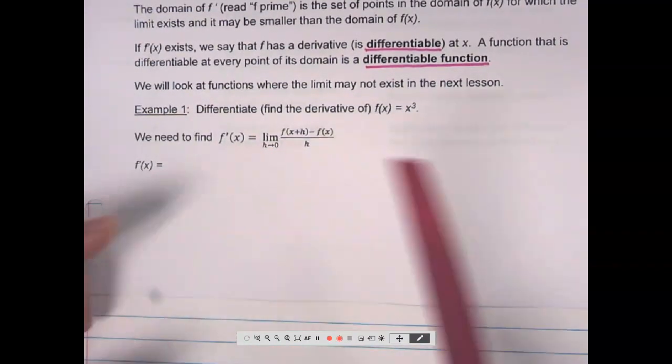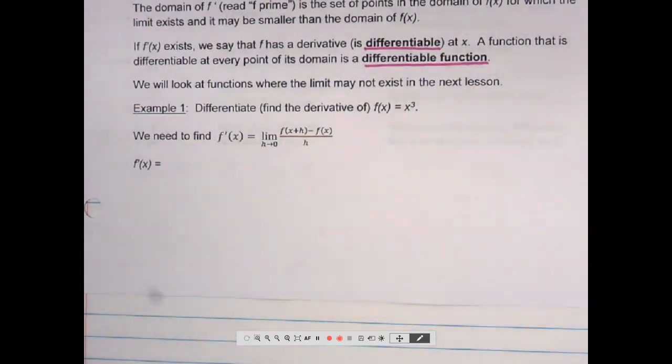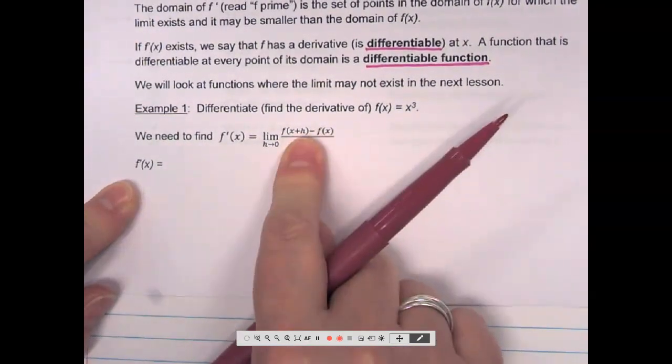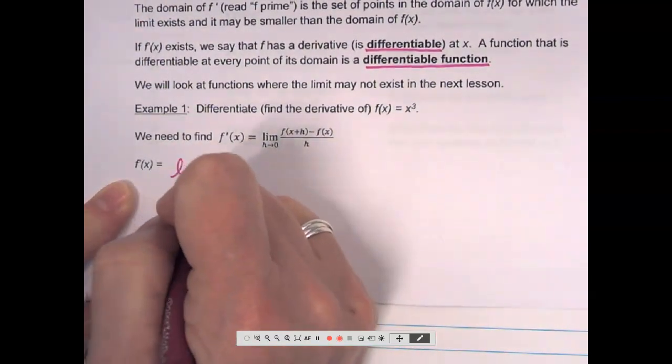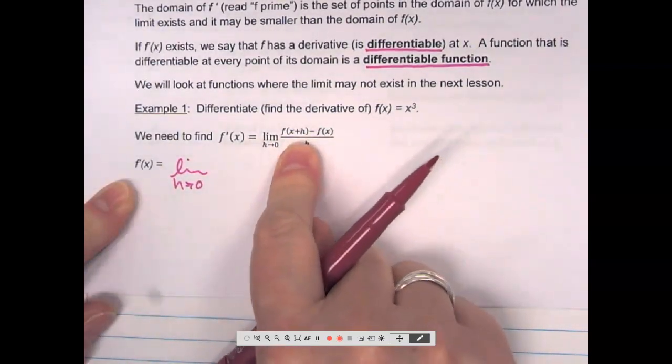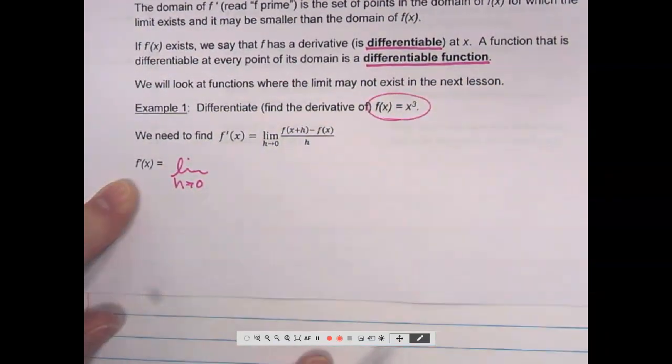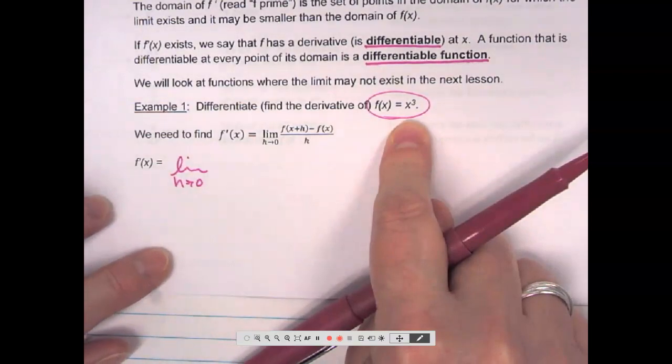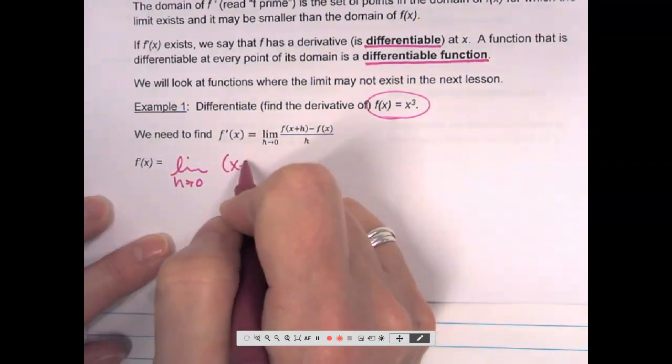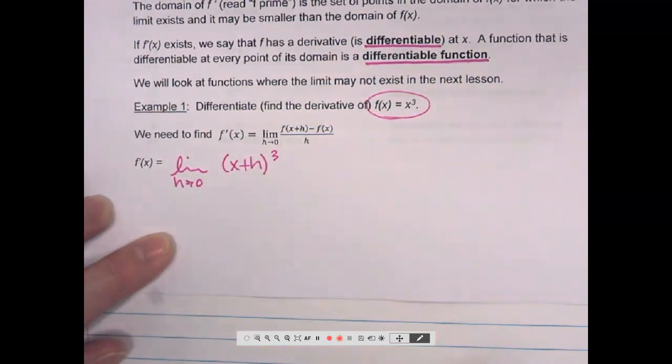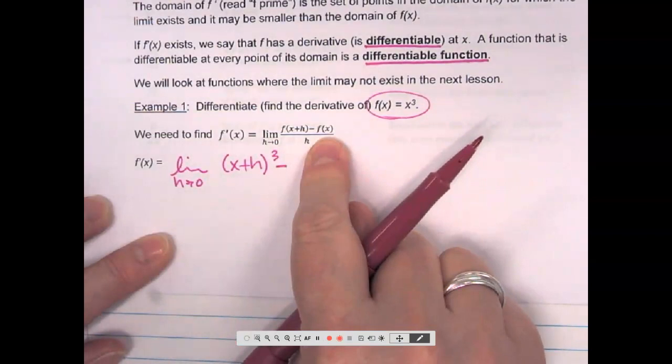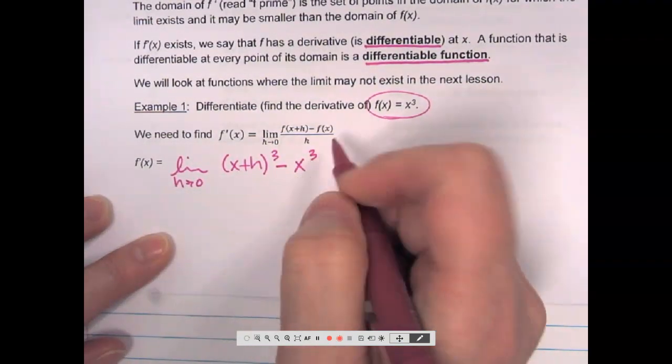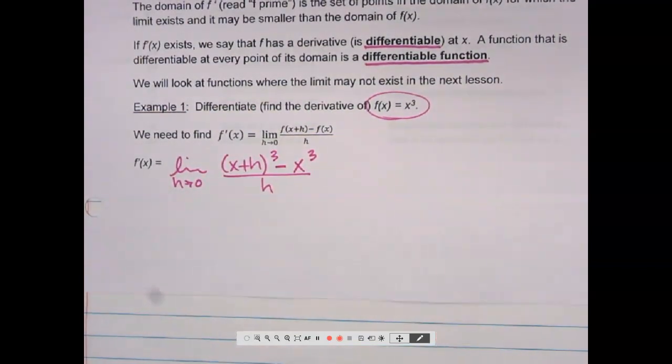So, here's our rule that we're going to apply. Same thing that we've been using except instead of A, I'm using an x. So, f prime of x means all of this. I still want the limit as h approaches 0 of f of x plus h. Here's my function. If I find f of x plus h, what does that look like? Plug x plus h where the x is. So, I have x plus h cubed minus f of x. Well, f of x is x cubed over h.